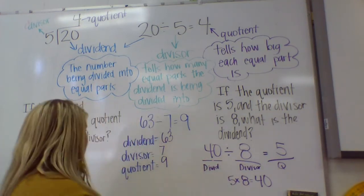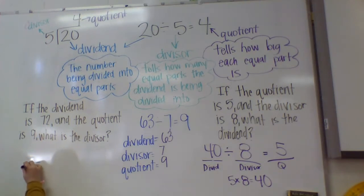On another one, remember we have dividend divided by divisor equals the quotient. If the dividend is 72 and the quotient is 9, what's the divisor?